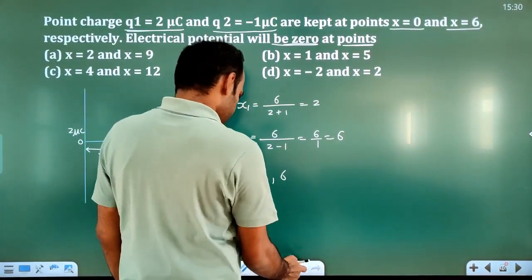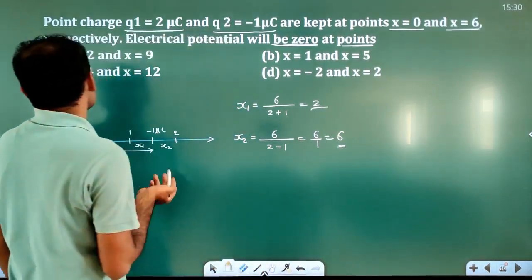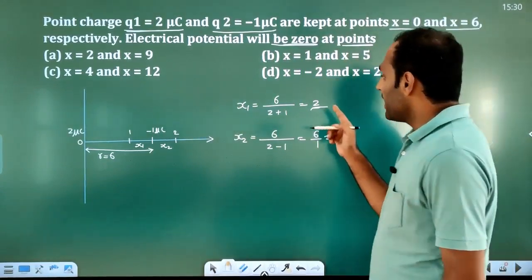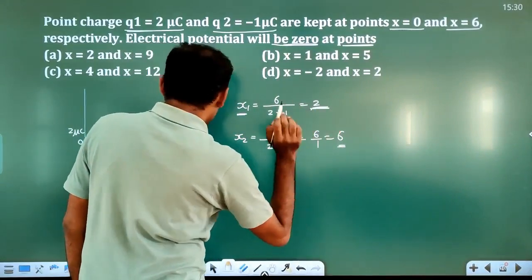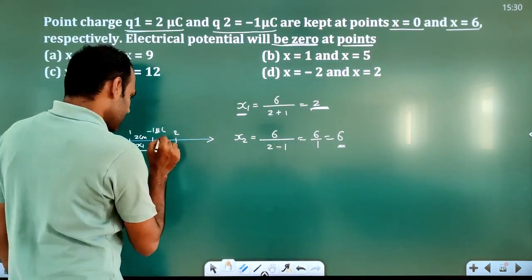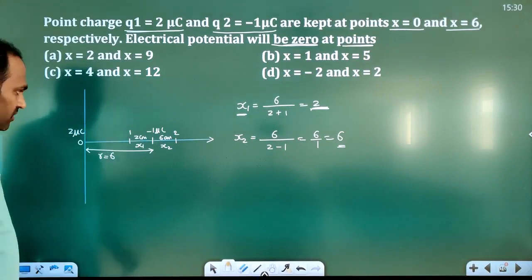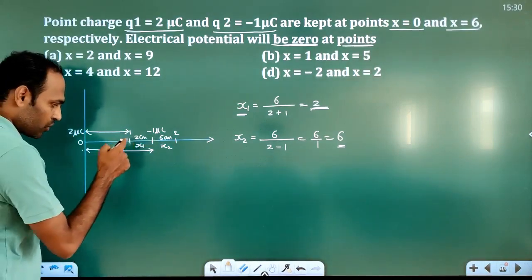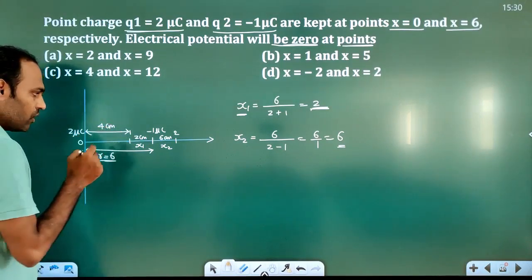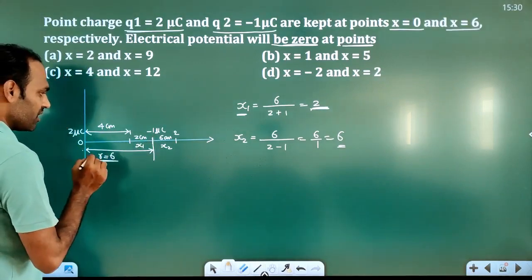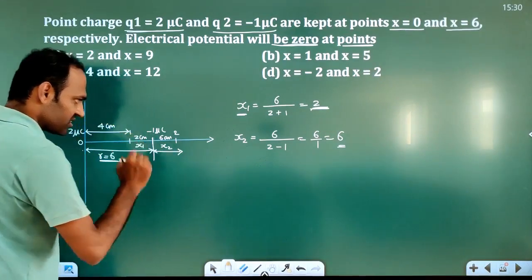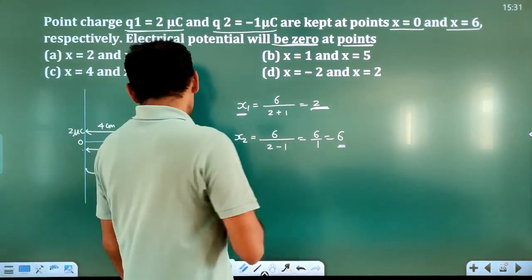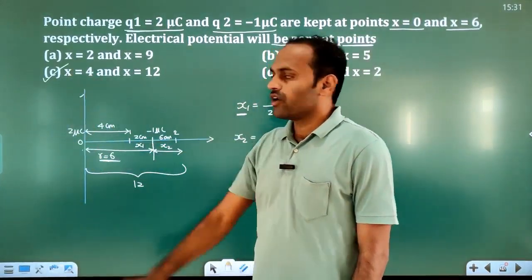We get zero potential points at distances 2 and 6 from the smaller charge (minus 1 microcoulomb). But they are asking distances from the origin. The smaller charge is at x equals 6 from origin. So the first point is at 6 minus 2 equals 4 cm from the origin. The second point is at 6 plus 6 equals 12 from the origin. So the locations are 4 and 12. Option C will be correct.